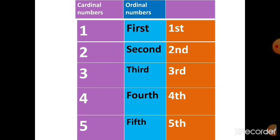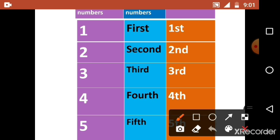In first column, cardinal numbers, in second column, ordinal numbers. One, F-I-R-S-T, first. Two, this is cardinal number, ordinal number is second, S-E-C-O-N-D, second.